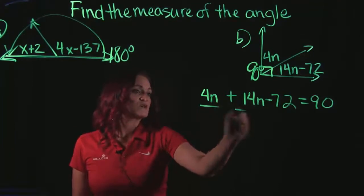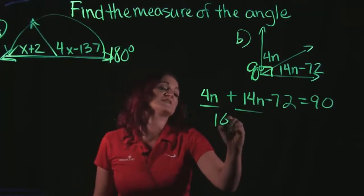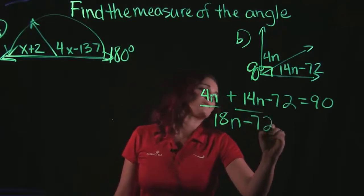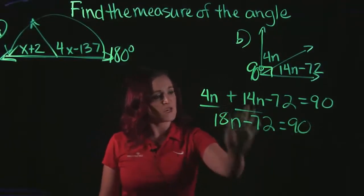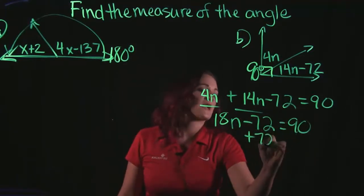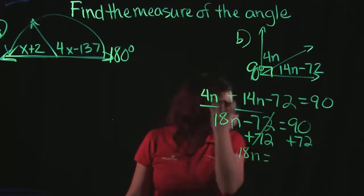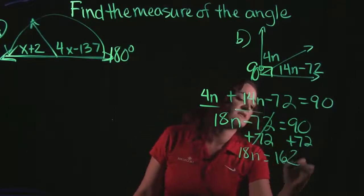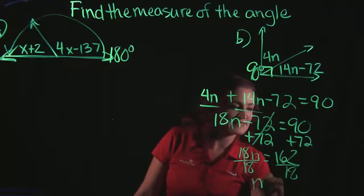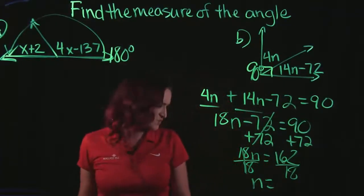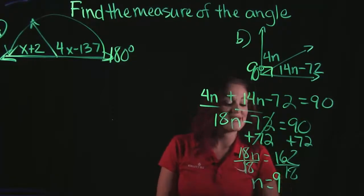Using our solving equation skills, we need to combine our like terms. So 4n plus 14n gives us 18n. Drop down the rest of the problem. Since our variable is on the left-hand side, we move our number to the right-hand side. So add 72 to both sides. And we get that 18n is equal to 162. And we're going to divide both sides by 18, and we get that n is equal to 9.